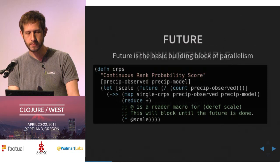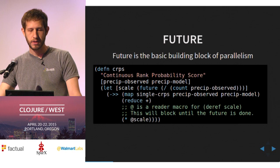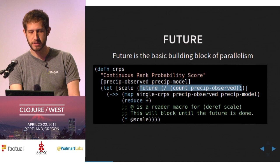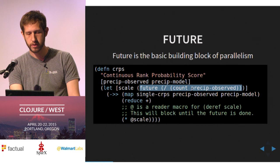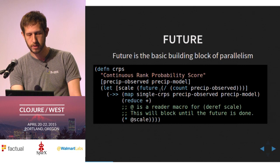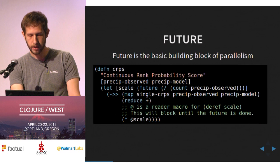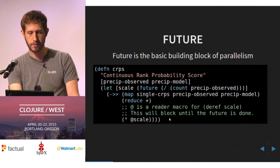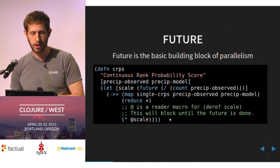I'll start with future. I've changed the example to insert a future. There are two pieces of work being done: the CRPS calculation, and also, because our input may be a sequence, we don't know its length a priori — we have to count each one, and that'll take some time. To save time, let's do that in the background in parallel with a future. Then in our main thread we'll map and do our normal computation and reduction. Then we need to get the value out of that future, which we do with deref — or in Clojure, the at-sign is a reader macro for deref.